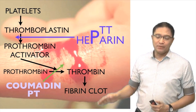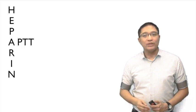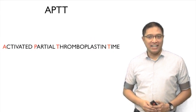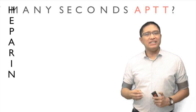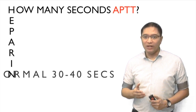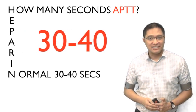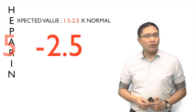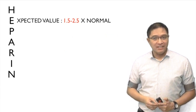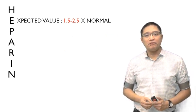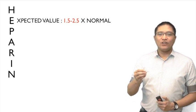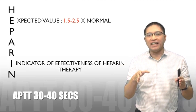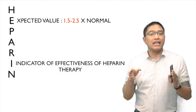Now we know that heparin is very important. When we give heparin, we check the APTT or activated partial thromboplastin time. The normal APTT is 30 to 40 seconds. The expected therapeutic value, however, is 1.5 to 2.5 times the normal. The indicator of effectiveness of heparin therapy is that the APTT, which is 30 to 40 seconds, is 1.5 to 2.5 times the normal.